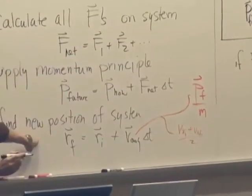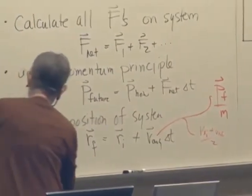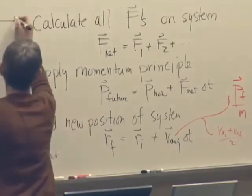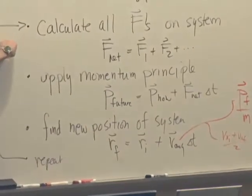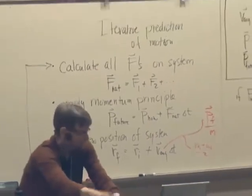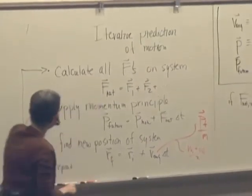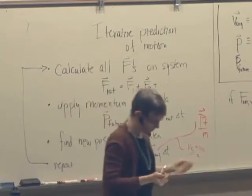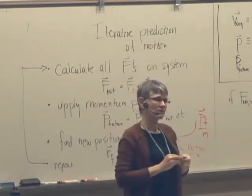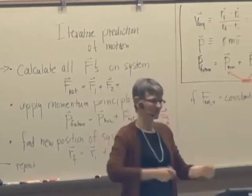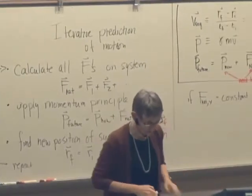And then what happens is we do the whole thing again. Because now the forces may have changed. So now I have to go back and recalculate all the forces. Find a new net force. Then we use the momentum principle again. Then we find the new position. We do it again. We do it again. We do it again. And we just can do it as long as we can calculate the forces. We can just do it forever and predict the motion of the system arbitrarily into the future no matter how complicated it is.